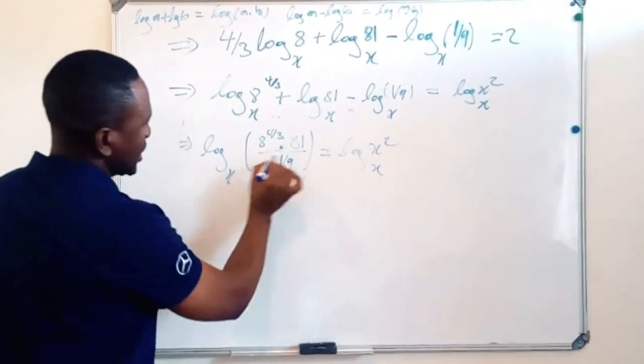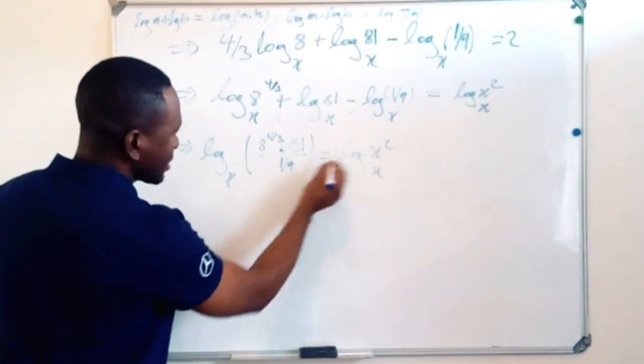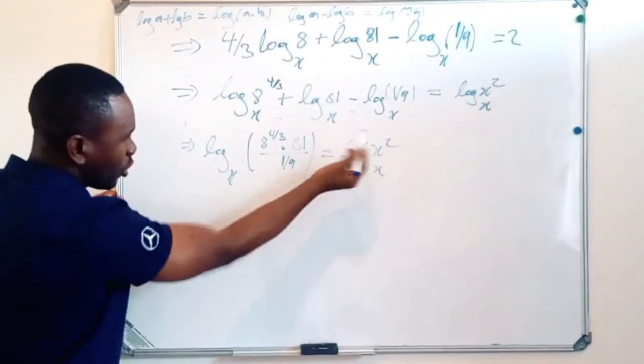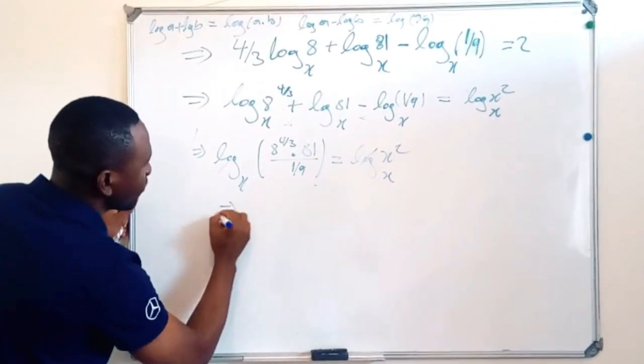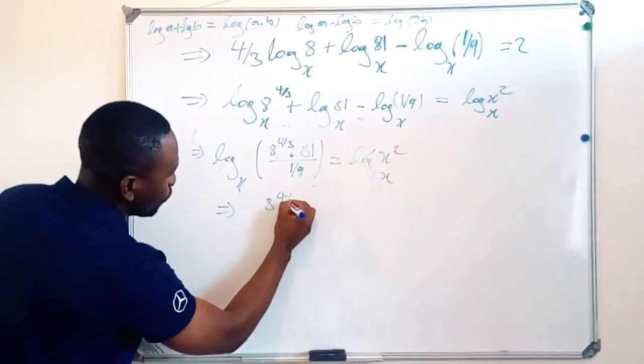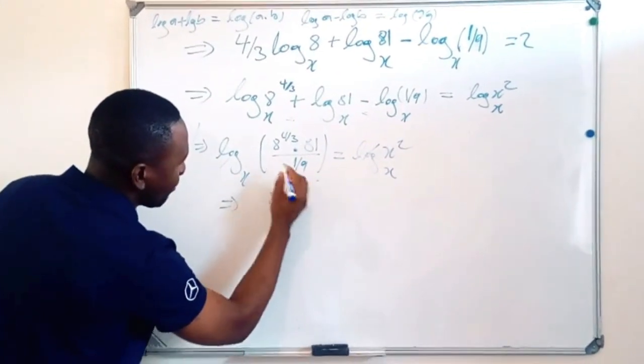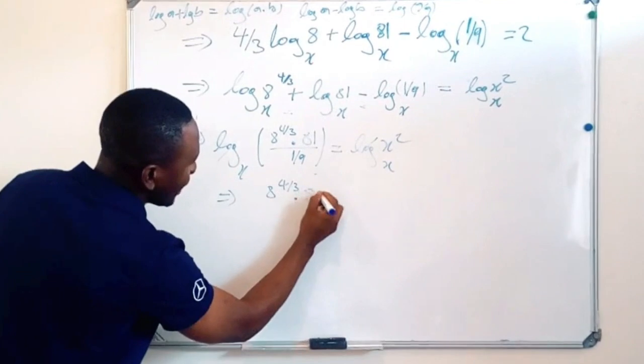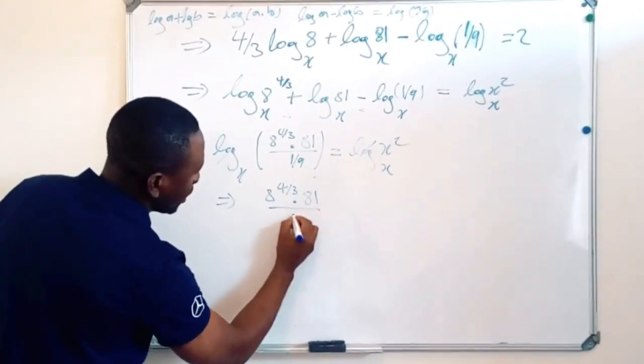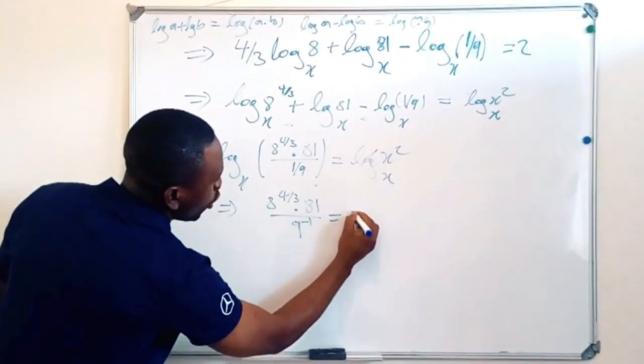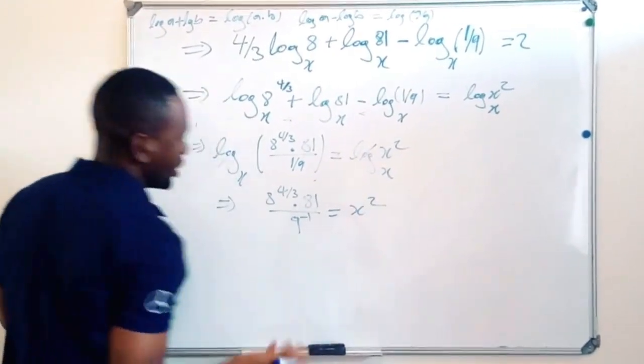So then we know that, log both sides, so I can remove log this side as well as log that side. Which will give me 8 exponent 4/3 multiplied by 81 divided by 9 exponent minus 1. So then, this is equal to x squared.